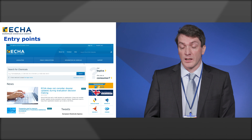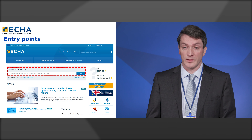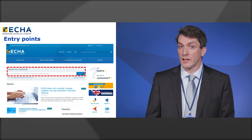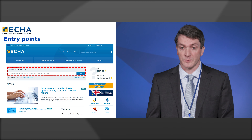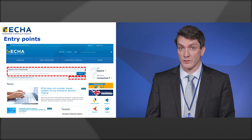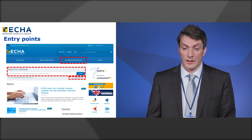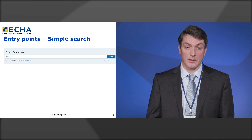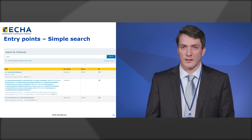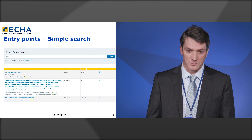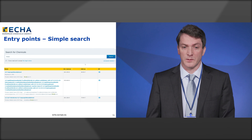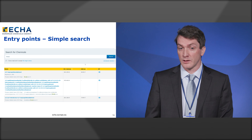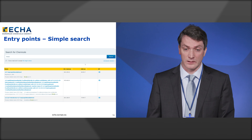The entry points to this data on the ECHA website are the search for chemicals, which is the main entry point to everything — you can search by any public identifier of any kind to find a relevant substance. For more expert users we also have an advanced search offering very powerful functionalities, and we have the full picture of everything in the information on chemicals tab. For example, in the simple search you can type bisphenol in Cyrillic and get results matching against the IUPAC name of bisphenol A and a process-related name from CLP in Bulgarian. There's a lot of logic behind it to always prioritize the most relevant result.